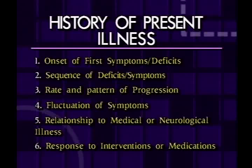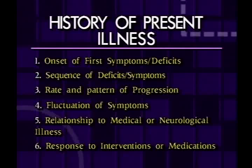Next, you want to identify the rate and pattern of progression of symptoms. Alzheimer's disease and most other types of dementia progress relatively slowly over a two to three to five year period. Usually families will say he was a little forgetful three or four years ago, then a couple years ago he couldn't do his checkbook anymore, and then last year he wasn't paying the bills and sometimes left the gas on. That kind of slow, steady progression is typical of Alzheimer's disease.